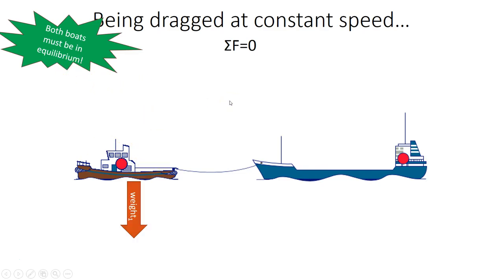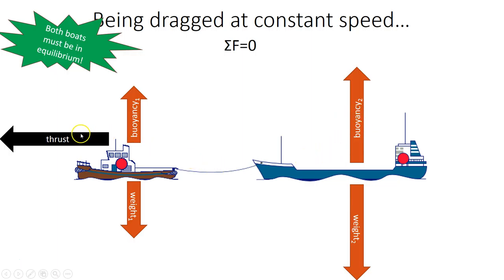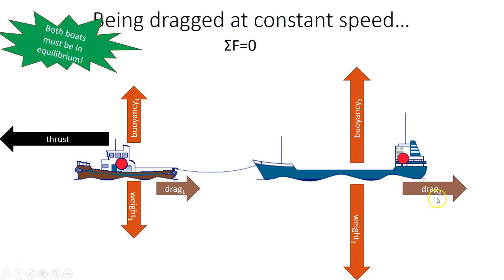The first boat has a weight force, and therefore it has a buoyancy force that's equal and opposite. The second boat equally has a weight and buoyancy. There's a thrust provided by the propellers in the tugboat, and there's a drag force acting on the tugboat, and a drag force acting on the bigger boat. This one will probably be larger because it's a bigger ship.